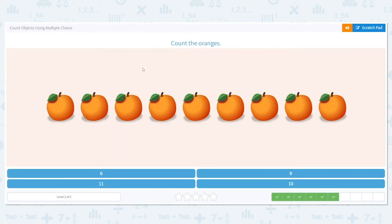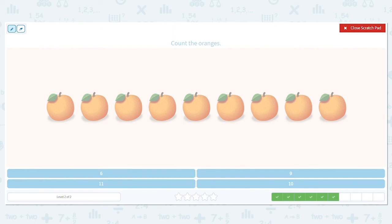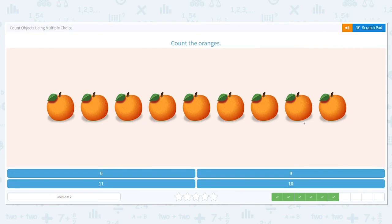Let's try another one. Count the oranges. There will either be 6, 9, 11, or 10. Now this time, I will mark them, but you count out loud. How many did you get? 9. Good job. So let's click on 9.